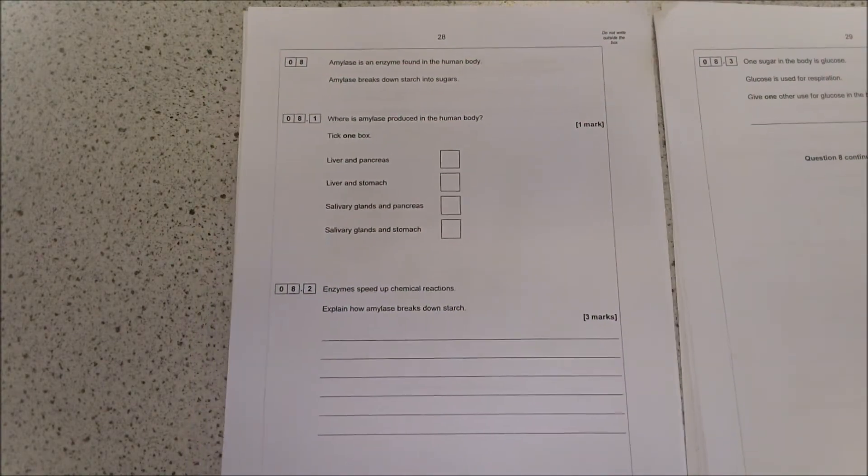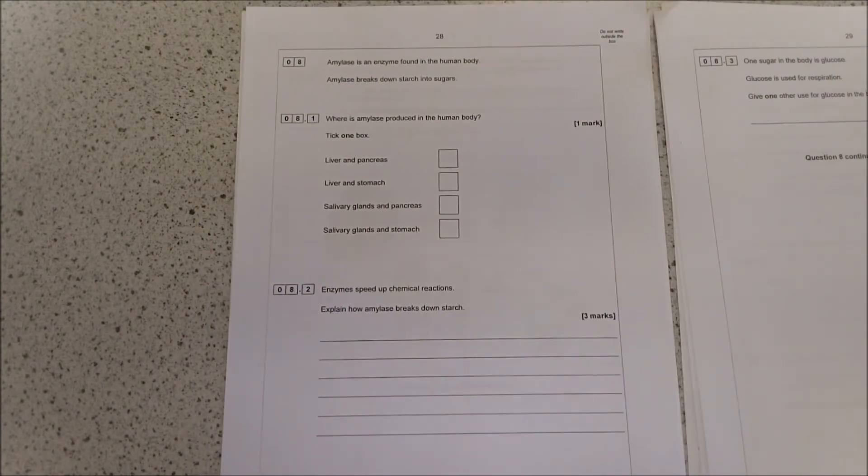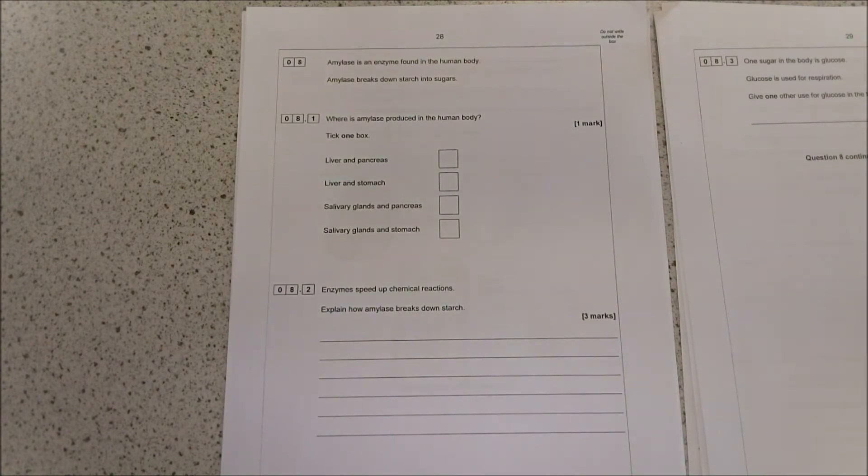An enzyme speeds up chemical reactions. Explain how amylase breaks down starch. If it's talking about speeding up chemical reactions, you need to talk about it in terms of being a catalyst. Amylase is a biological catalyst. It speeds up the rate of breakdown of starch by holding it in place so that water molecules can break the bonds between individual sugar molecules. You might also want to talk about the fact that enzymes lower the activation energy of any reaction as a catalyst.